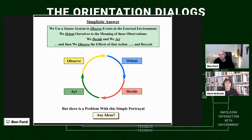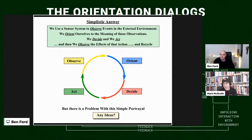When OODA is simplified to this, you're going to get the opposite of what John Boyd said. Boyd said: if you understood this the correct — or rather the effective — way, you're going to get geometric results that your competition is not going to be able to keep up with. If you simplify it, you're literally tying your hands, your legs, everything. You're creating impediments and not unleashing the power of what you can do with your orientation.